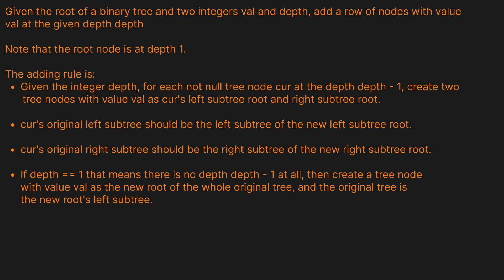If depth equals one, there is no depth minus one, so create a tree node with value val as the new root of the whole tree, and the original tree becomes the new root's left subtree. That was an absolute mouthful. Let's look at an example and see what they actually want us to do — it's really not that complex once you see the picture.